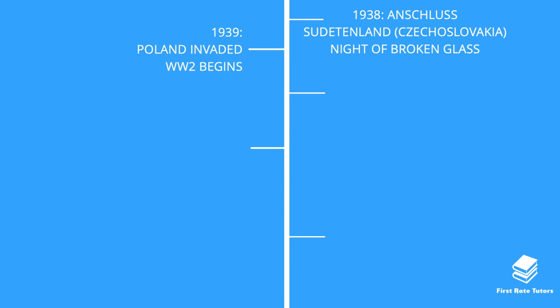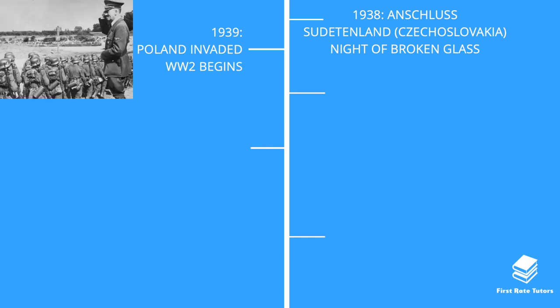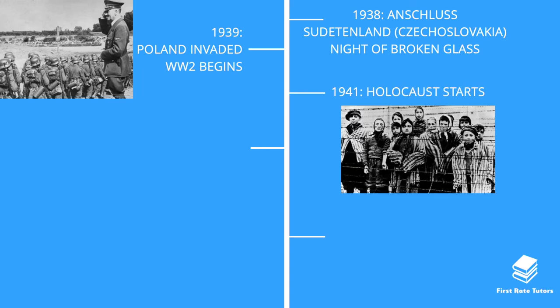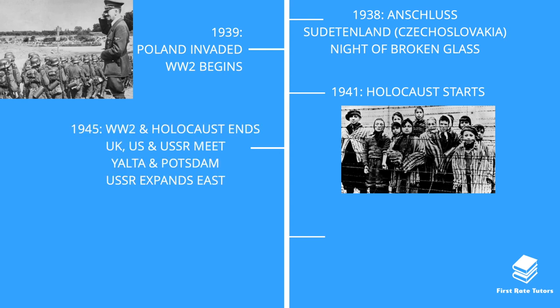In 1939 the Second World War began when Hitler violated the Munich Agreement and invaded Poland. In 1941, during the war, the Holocaust started — seen as the 'Final Solution' by the Nazis. Across all the states and territories Germany had invaded, prisoners — especially Jewish prisoners — were exterminated, leading to over six million Jewish people dying in concentration camps. In 1945 the Second World War ended, Germany was defeated, the Holocaust ended, and Jewish prisoners and other minorities were rescued.